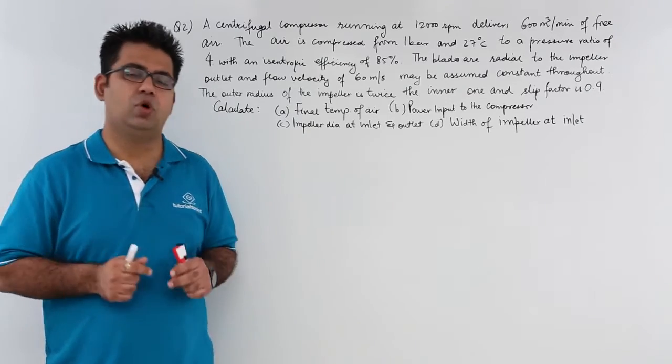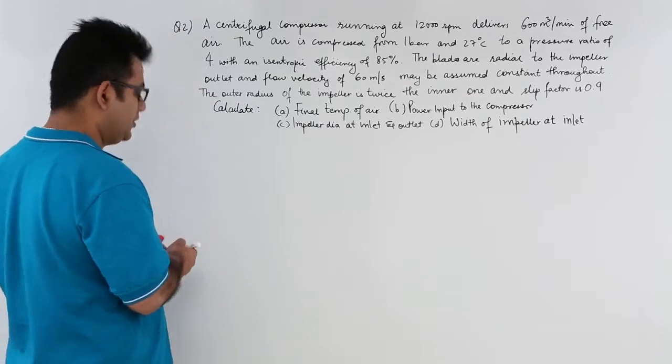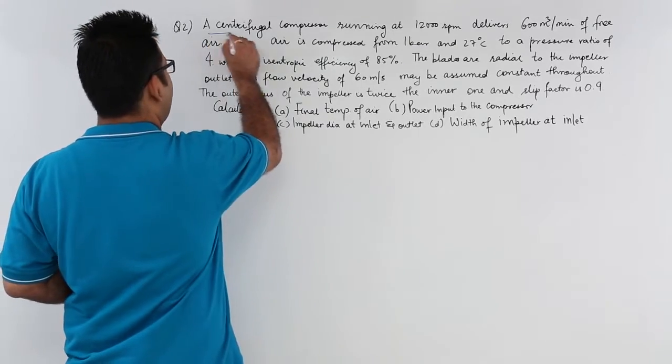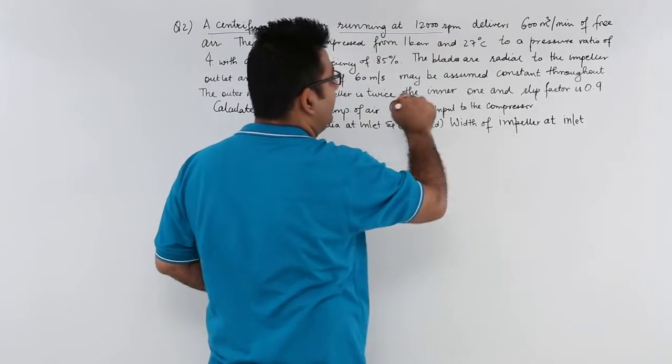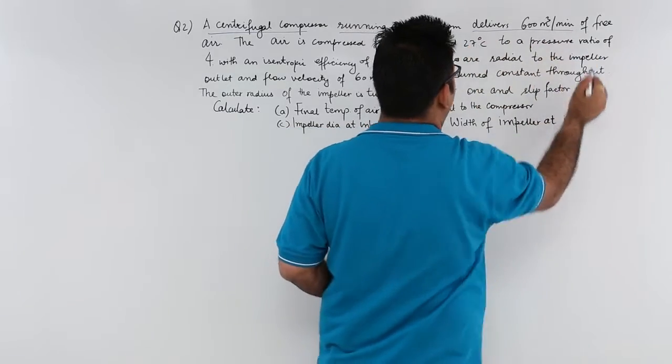Now let us look at question number 2 on centrifugal compressors. The question says a centrifugal compressor running at 12,000 RPM delivers 600 meter cube per minute of free air.